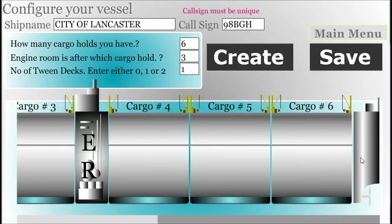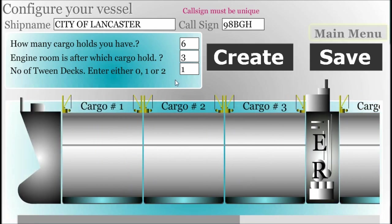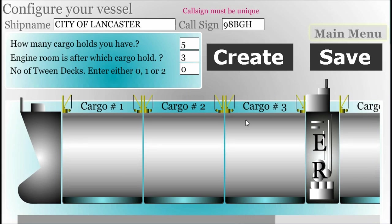Once we are satisfied with the configuration, we click 'Create' to create a profile. The profile is created and we save the profile. Please note that all ship profiles are created just once.